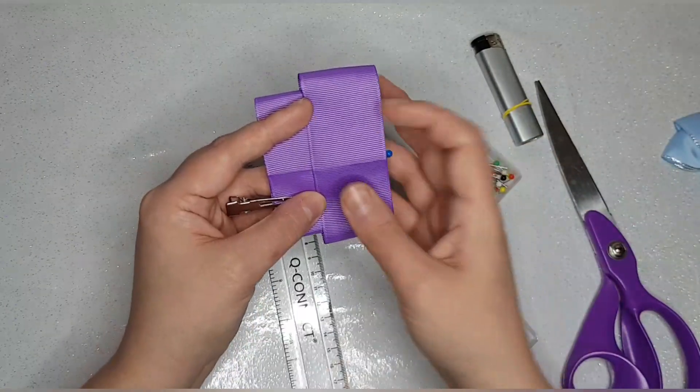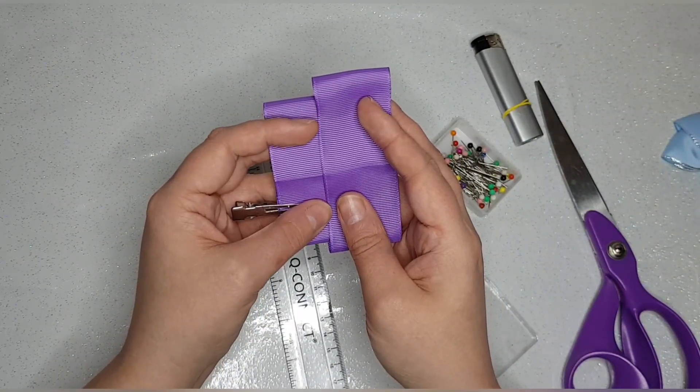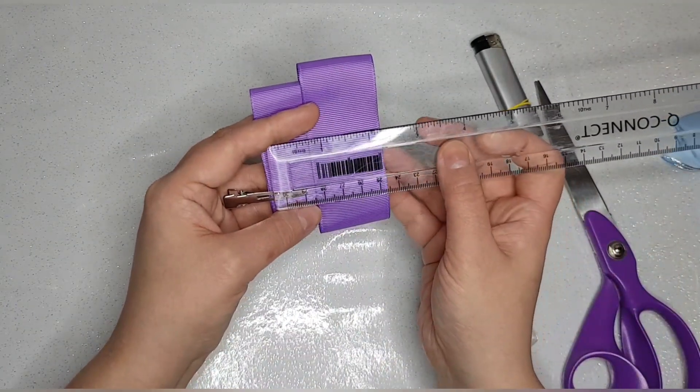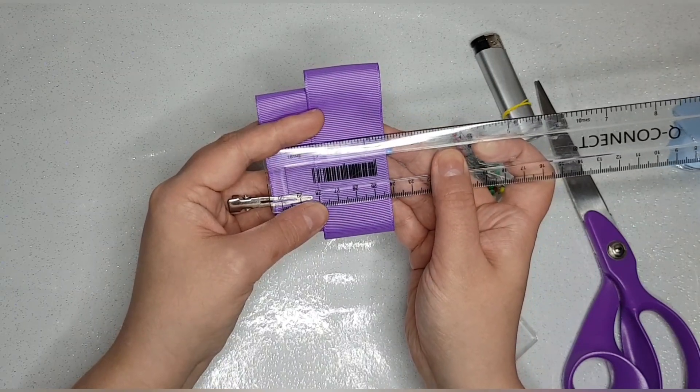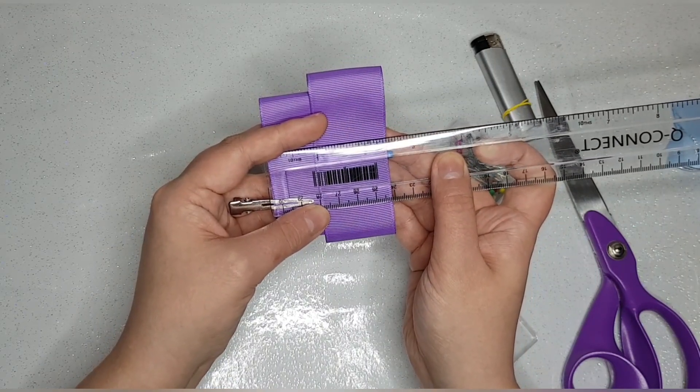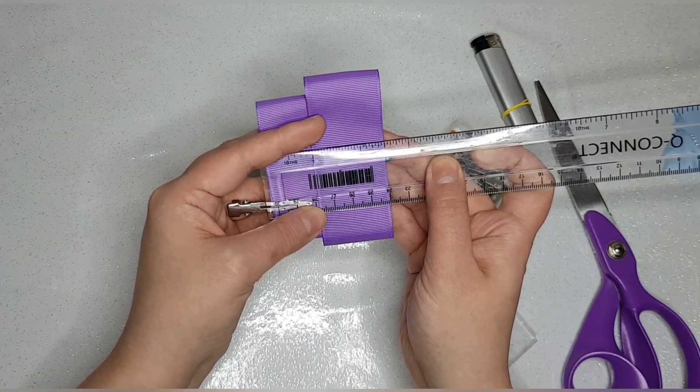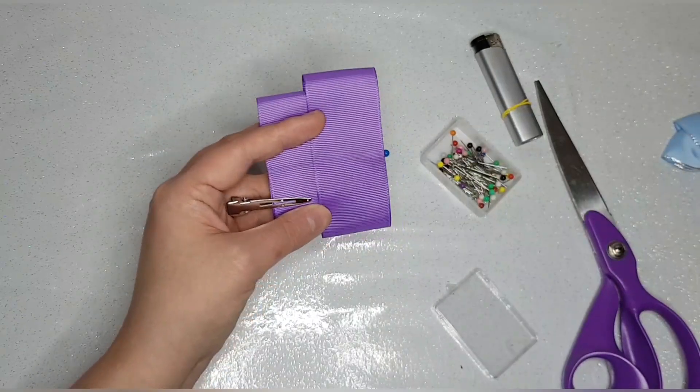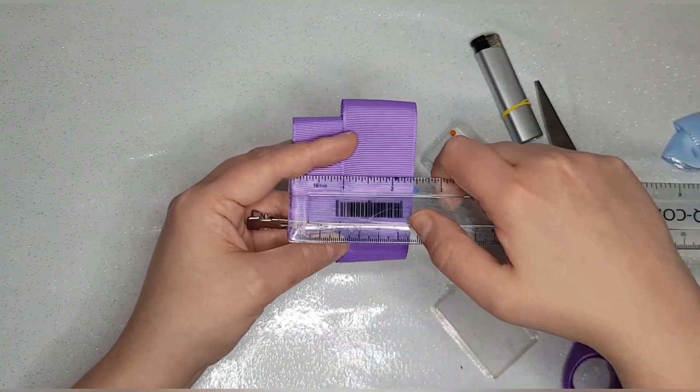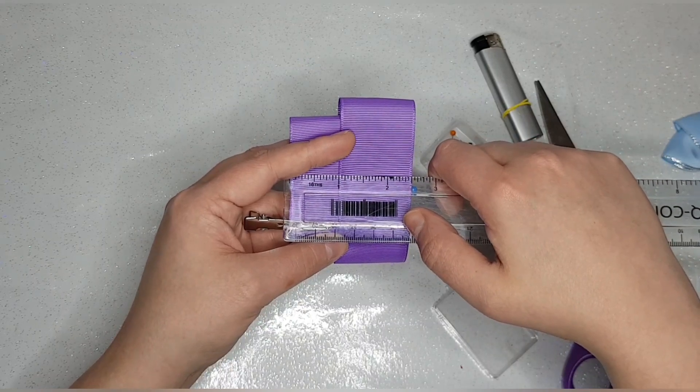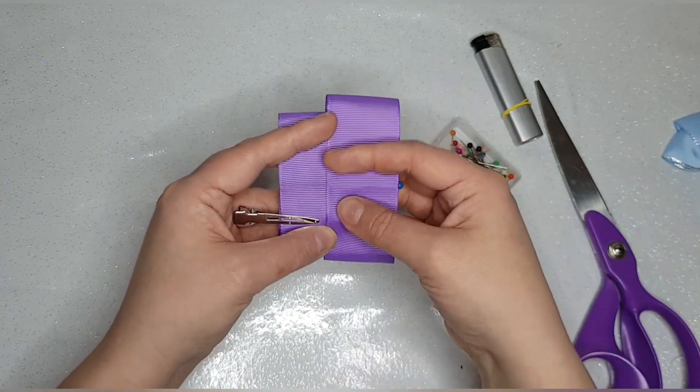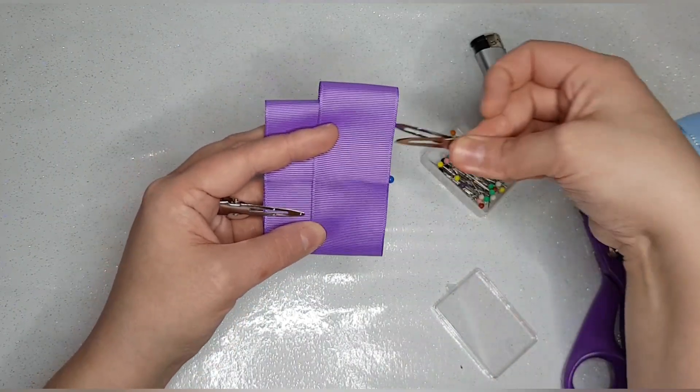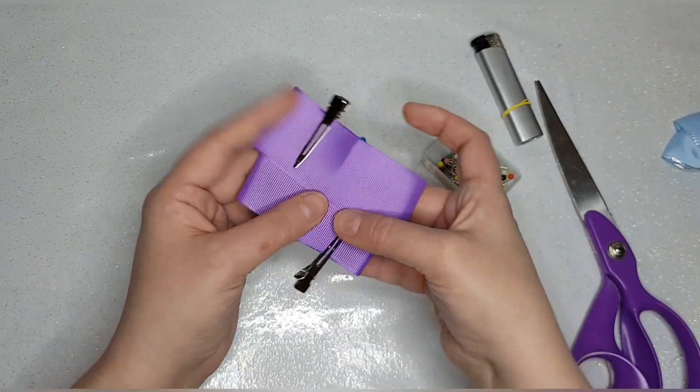I'm going to get a ruler so you can see, and we want these so that it's two inches. So basically we've done it so that you've got an inch of this bottom layer showing.